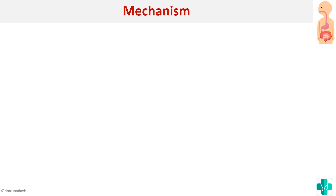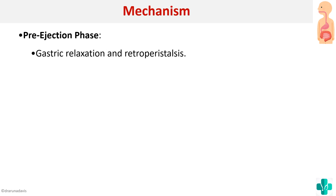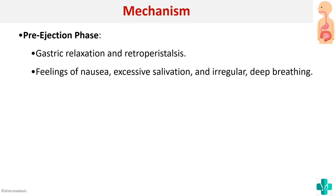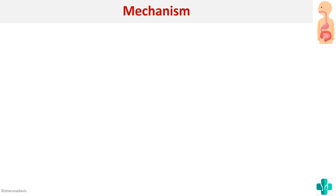The mechanism of vomiting has three phases. The first is the pre-ejection phase, during which there is gastric relaxation and retroperistalsis so that contents from the duodenum come back to the stomach. During this phase we experience nausea, excessive salivation, and irregular and deep breathing.